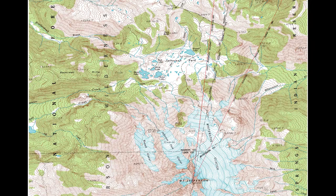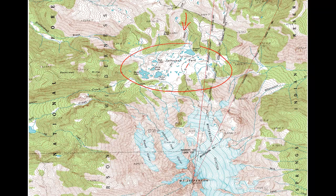This is the topographic map showing Jefferson Park and Mount Jefferson to the south. The photo on the previous slide was taken from this area, with the camera viewing towards the south. Here's the flat area of Jefferson Park — notice how widely spaced the contours are in this area, indicating very gentle or flat ground. To the south of Jefferson Park, we find much more closely spaced contours, with elevations increasing as we move towards the summit of Mount Jefferson.